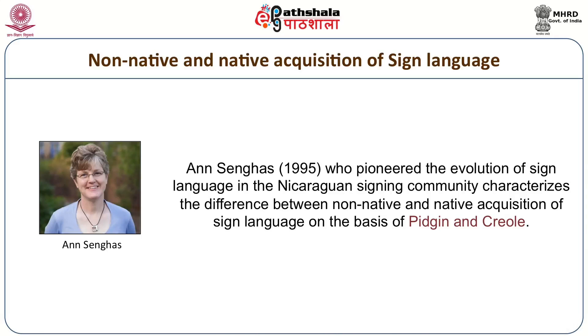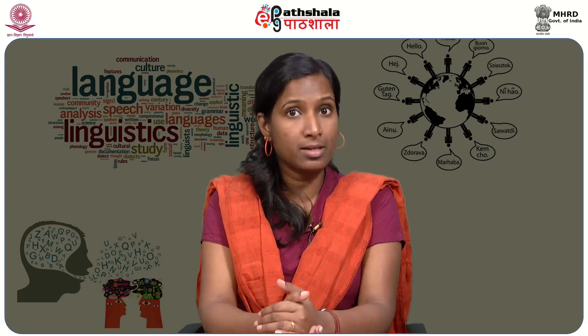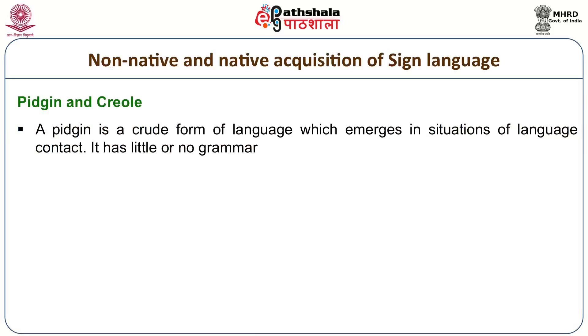Anne Tsengas (1995) characterized the difference between non-native and native acquisition of sign language on the basis of pidgin and creole. When people belonging to different language backgrounds come into contact for trade or other purposes and start interacting, a crude form of language evolves within the community. This is called pidgin — a crude form of language which emerges in situations of language contact with little or no grammar.